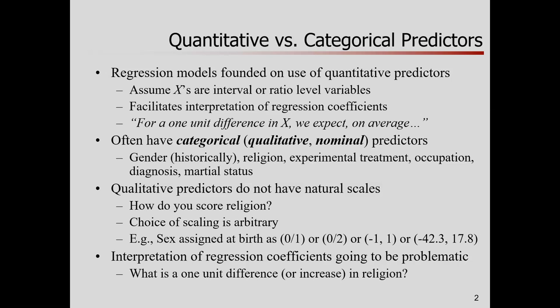Often we have categorical variables, you might see them referred to as nominal or qualitative variables as predictors. Things like, at least historically, how gender has been coded as categorical, religious affiliation, experimental treatment or control, occupation, marital status, a medical diagnosis. Often these predictors do not have natural scales. If I want to measure my participant's religion, how do I score that with a number? It's not obvious to me that we should.